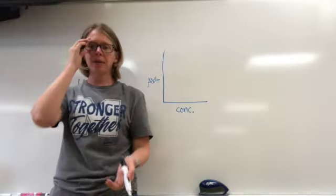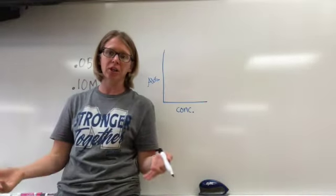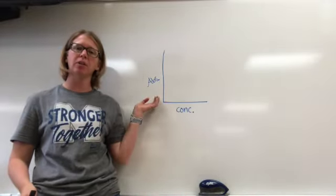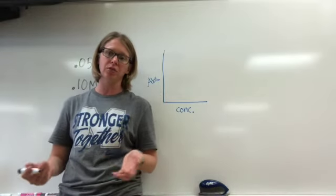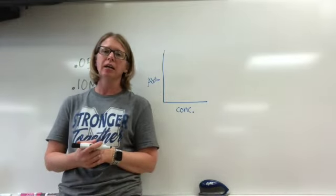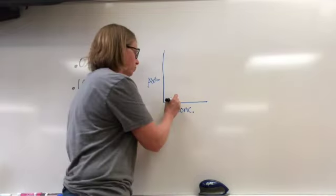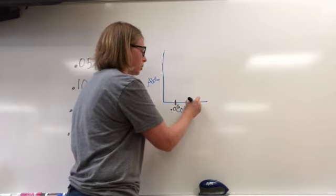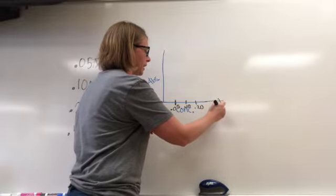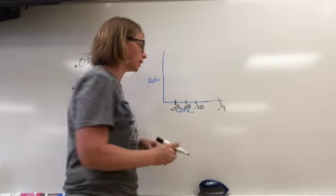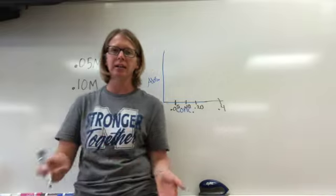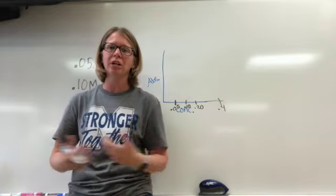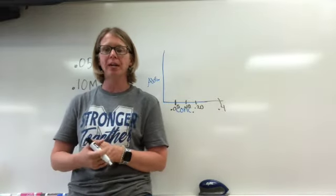The next part of the lab is creating a calibration curve. Basically, a calibration curve shows the relationship between concentration and absorbance of a specific solution like copper nitrate. We are going to measure the absorbance at concentrations of 0.05 molar, 0.10 molar, 0.20 molar, and 0.4 molar. Those measurements will be plotted on a graph. It makes sense that as concentration increases, absorbance should also increase.